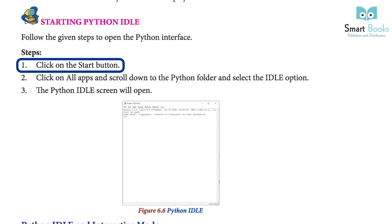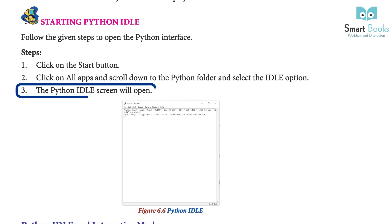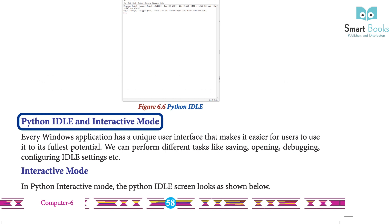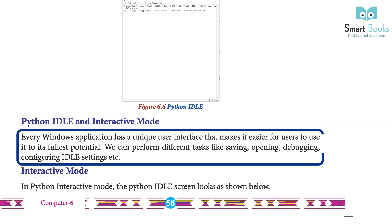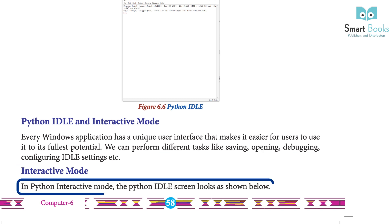Starting Python IDLE: follow these steps to open the Python interface. 1. Click on the Start button. 2. Click on All Apps, scroll down to the Python folder, and select the IDLE option. 3. The Python IDLE screen will open. Every Windows application has a unique interface that makes it easier for users to use it to its fullest potential. You can perform different tasks like saving, opening, configuring IDLE settings, and more.